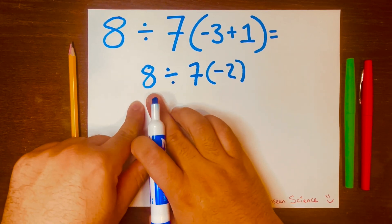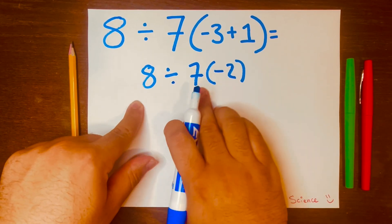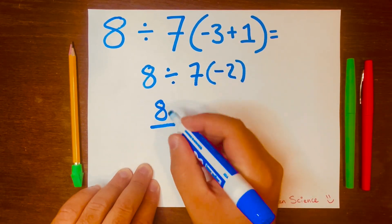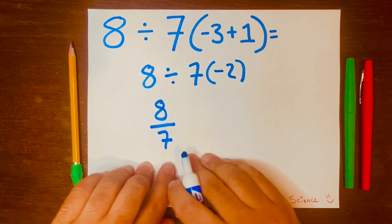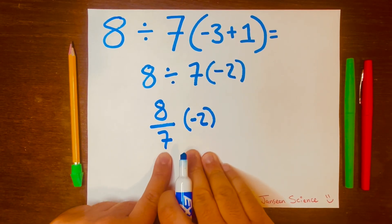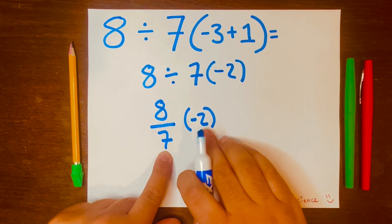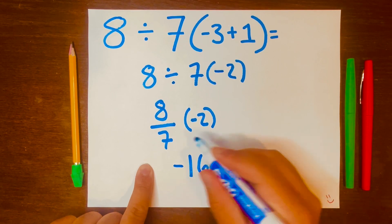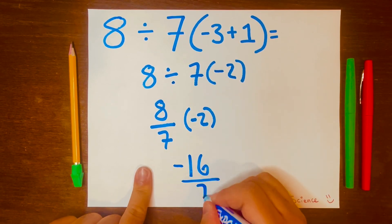All we have to do is turn 8 divided by 7 into a fraction, so it'll be written like this: 8 over 7. Then bring down the negative 2. Then all you have to do is multiply 8 times negative 2, that equals negative 16, and then 7.